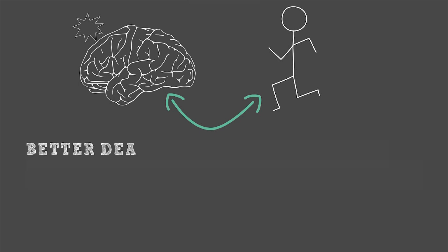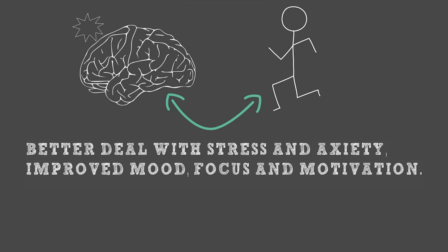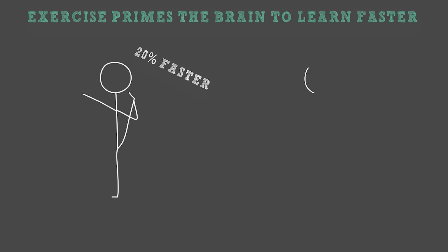Exercise has been shown to help people better deal with stress and anxiety, improve mood, focus, and motivation. A 2007 study has shown that exercise also primes the brain to learn faster. Subjects who did high-intensity training beforehand were able to learn vocabulary 20% faster than those who remained sedentary.